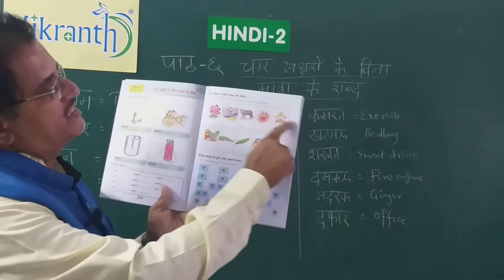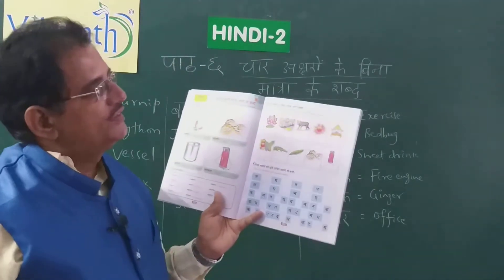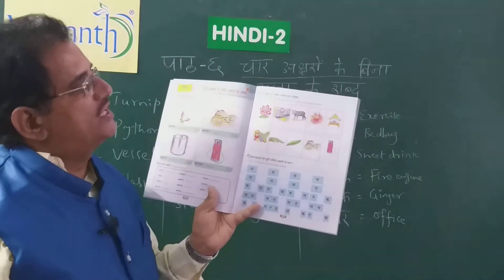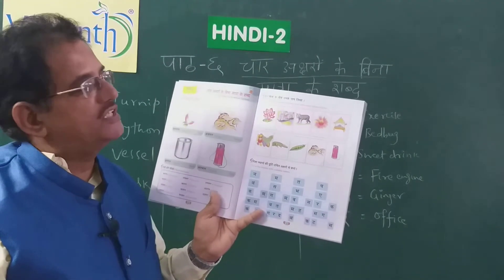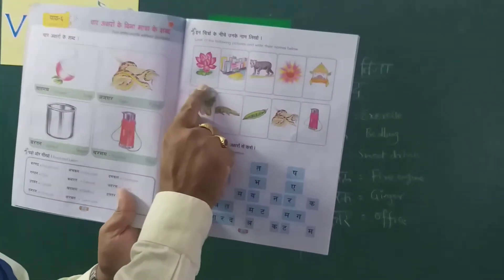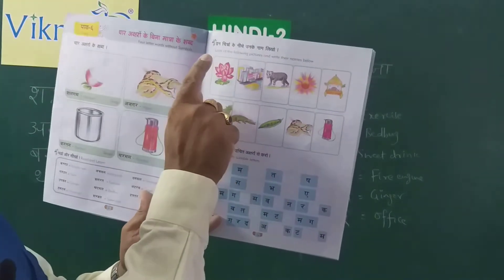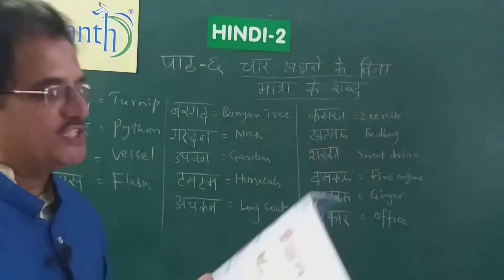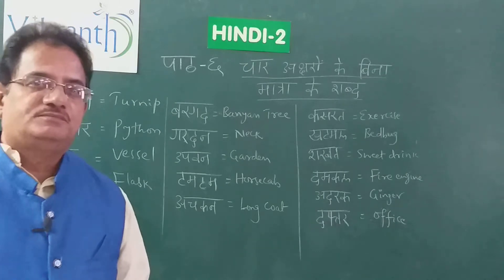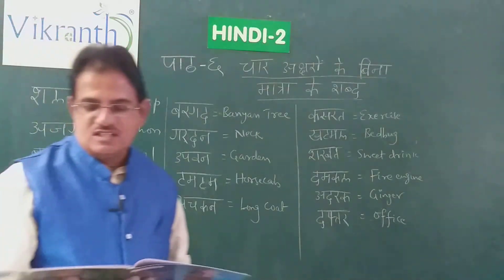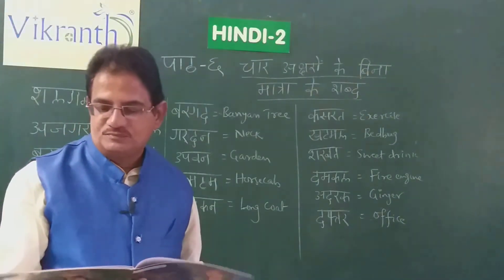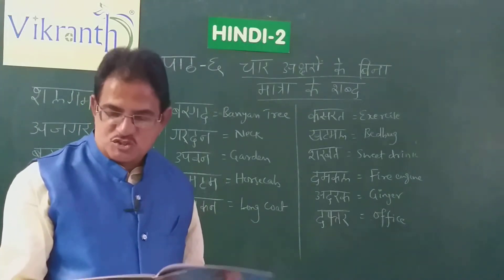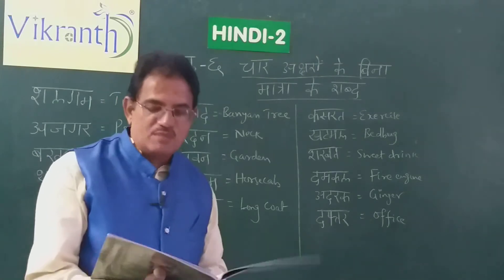In the next page, page number 13, there are some pictures given. You have to identify the pictures and write their names in the space provided under each picture — there is a blue line there. For example, the first one is Kamal — Kamal means lotus. Next, Shahar. Like that, you have to identify the pictures and write their names there.